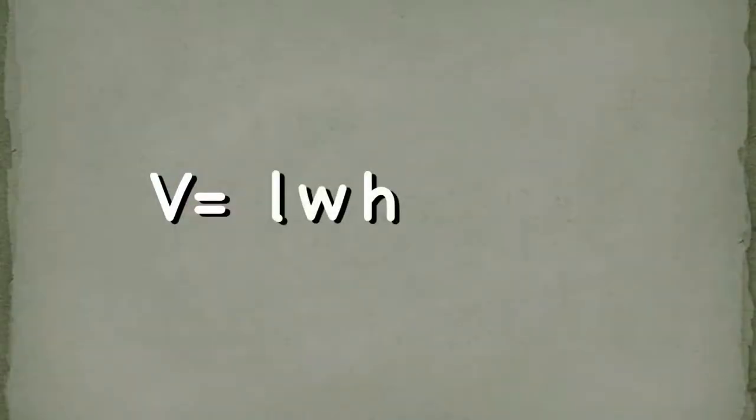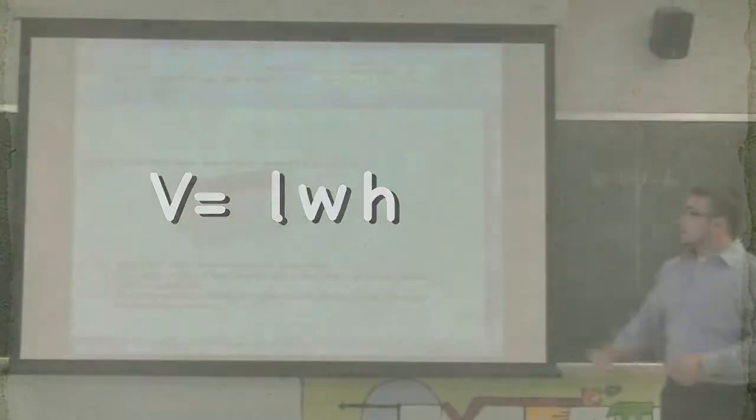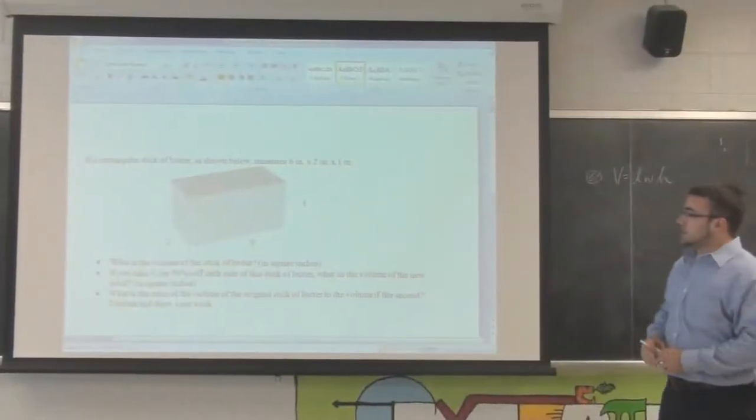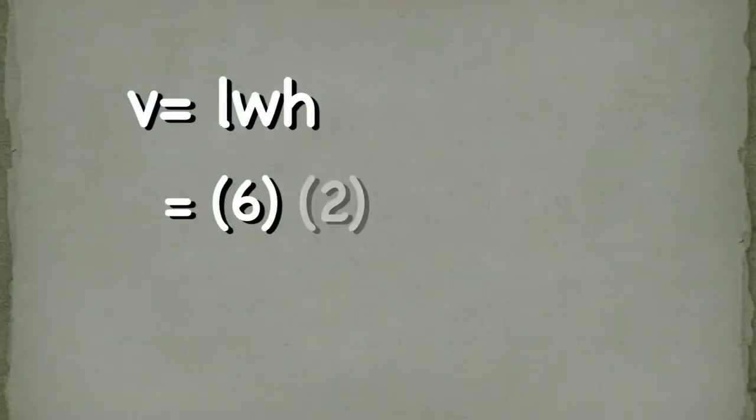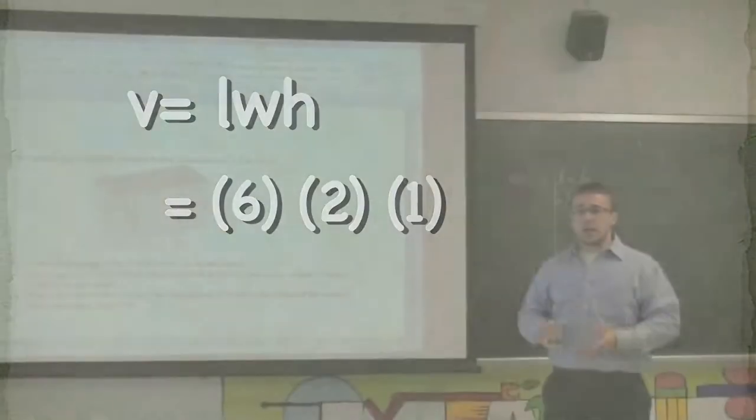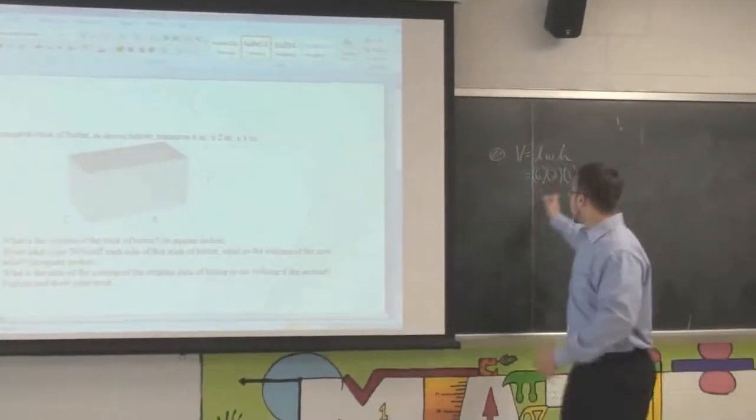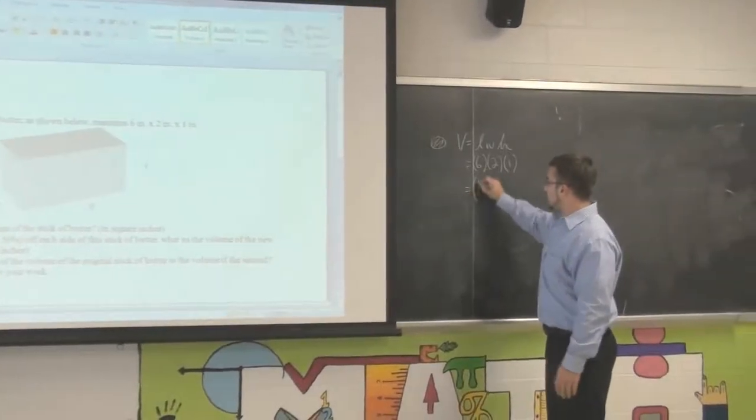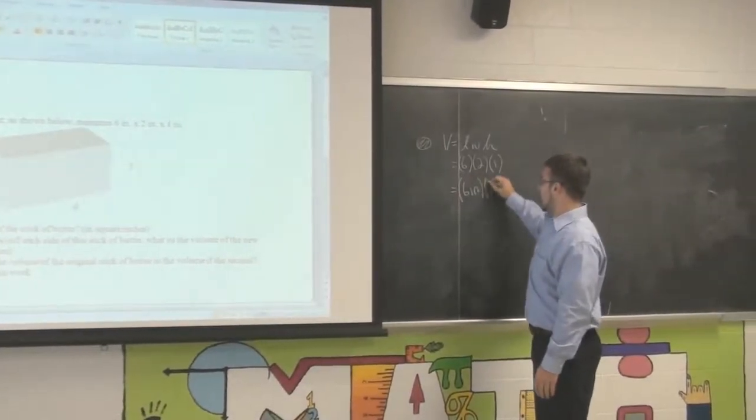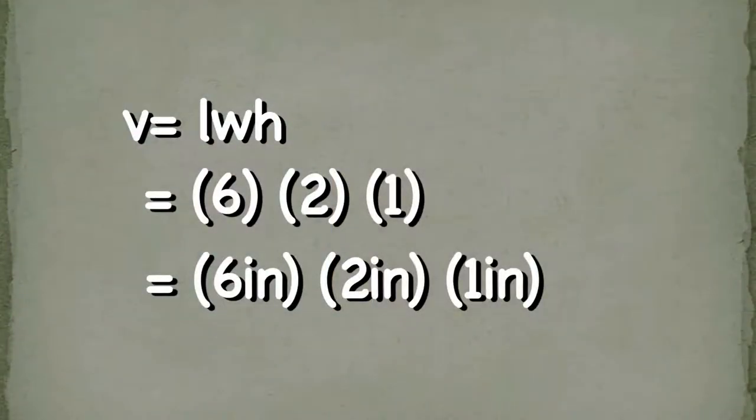The length of the butter times the width of the butter times the height of the butter. Looking at the dimensions, we will see that the length is six, the width is two, and the height is one. Now one key mistake that a lot of students make is that we forget the units as I portrayed up here. You want to make sure that you specifically include six inches times two inches times one inch.